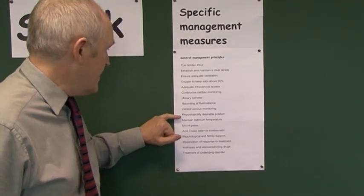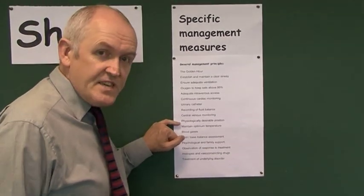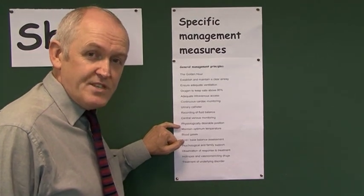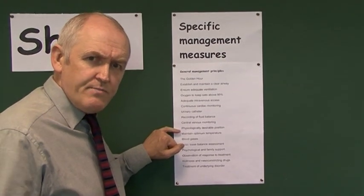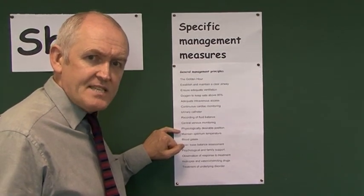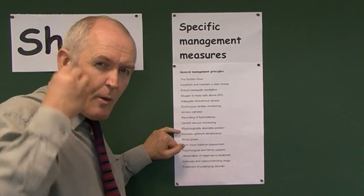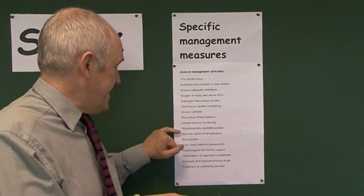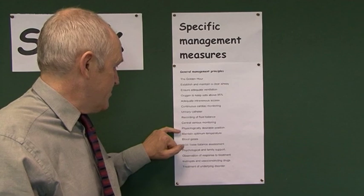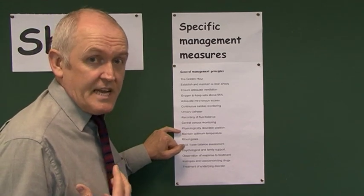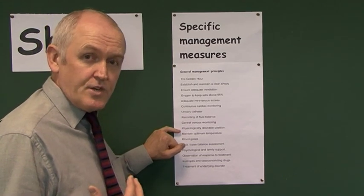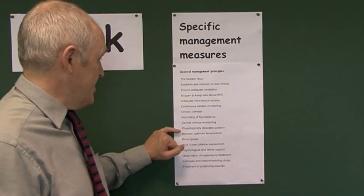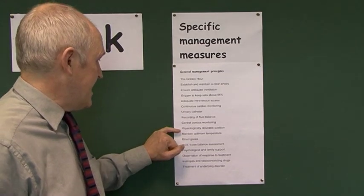The patient needs to be nursed in a physiologically desirable position — normally fairly flat so that blood is not going uphill to the brain and the brain is being well perfused. This depends on respiratory status, so you need to use common sense, but probably the patient will be nursed in a reasonably flat position.